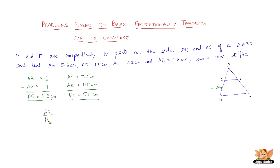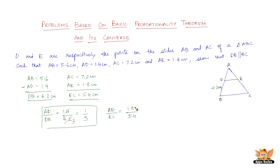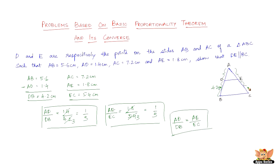Now let's compute the ratios. AD by DB equals 1.4 by 4.2. Since 1.4 goes 3 times into 4.2, the ratio is 1 by 3. For AE by EC, we have 1.8 by 5.4. Since 1.8 also goes 3 times into 5.4, that ratio is also 1 by 3. So AD by DB equals AE by EC, both equal to 1 by 3.